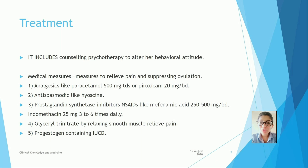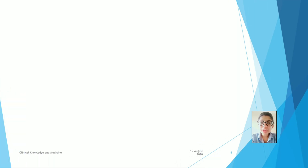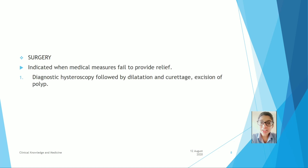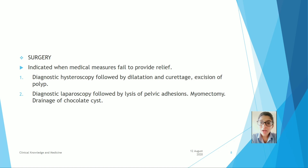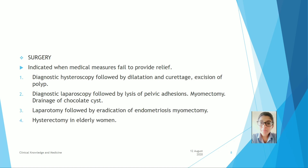Oral contraceptive pills suppress ovulation and are useful in relieving dysmenorrhea. Surgery is indicated when medical measures fail to relieve pain. Procedures include diagnostic hysteroscopy followed by dilation and curettage or excision of polyp, diagnostic laparoscopy followed by lysis of pelvic adhesions and myomectomy, drainage of chocolate cysts, laparotomy followed by eradication of endometriosis, myomectomy, hysterectomy in elderly women, and transcutaneous nerve stimulation.